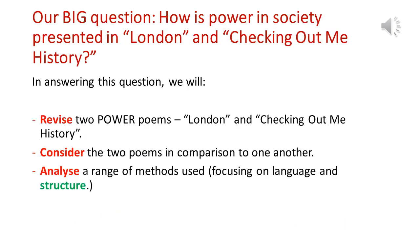Our big question for today is: how is power in society presented in London and Checking Out Me History? In answering that question we're going to revise those two power poems and consider them in comparison to one another, analysing a range of key methods — focusing on language, structure and imagery mainly. The power we see in London is the power of the government and the church over people in London, while in Checking Out Me History it's the power of the education system.